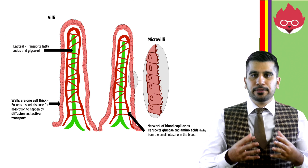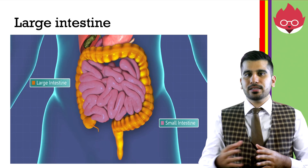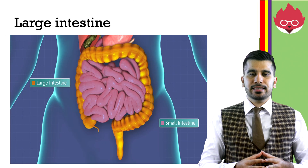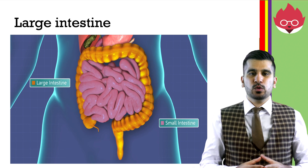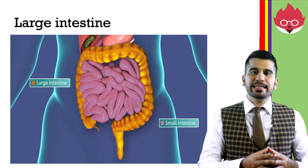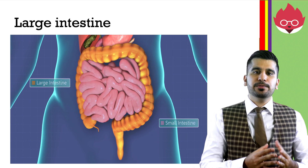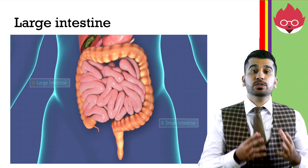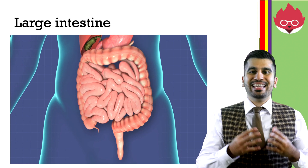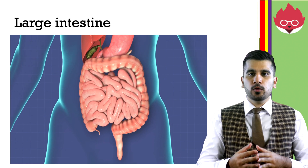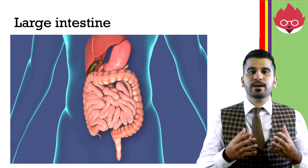From the small intestine, food will then pass into the large intestine. In the colon, water is absorbed. The remaining undigested food is referred to as faeces. This passes towards the rectum where it is stored before being released via the anus.